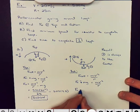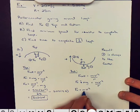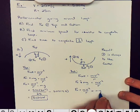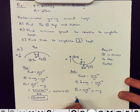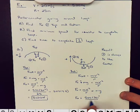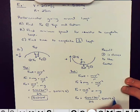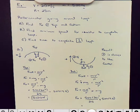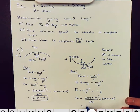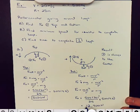So, normal here is going to be mv squared over r plus mg. So, we get here 500 times 20 squared over 25 plus 500 times 9.8. So I get 12,900 Newtons.